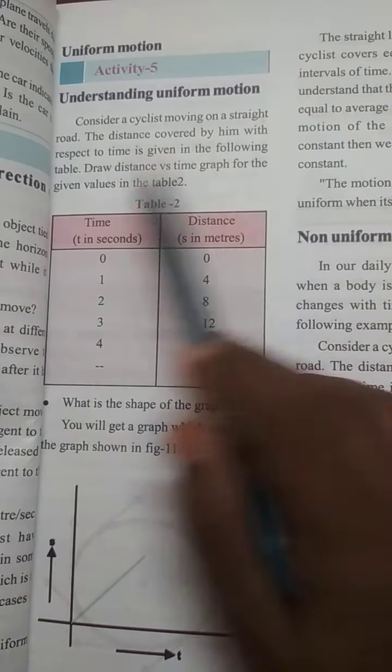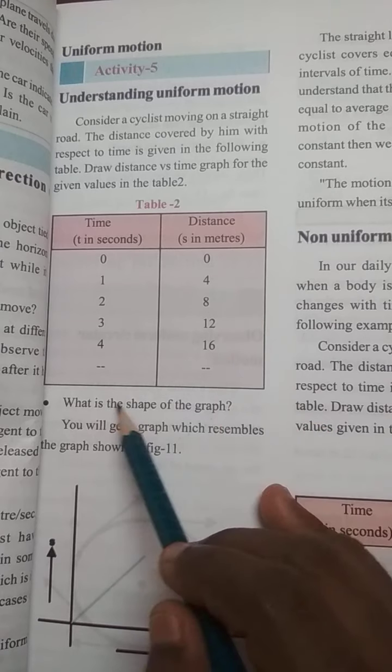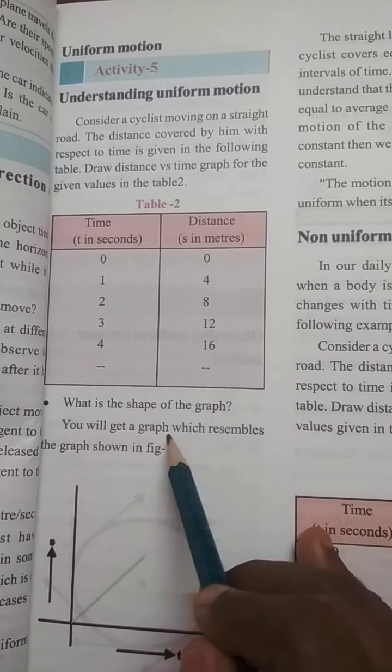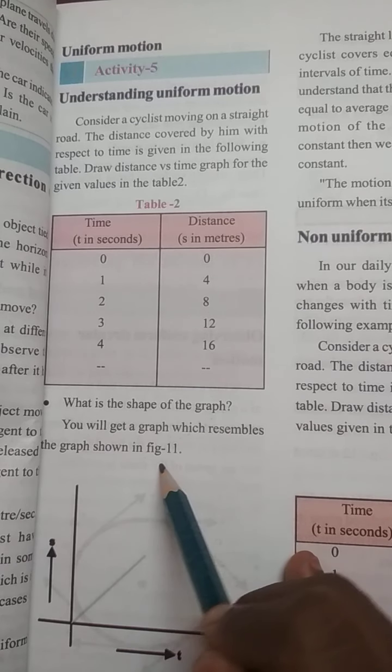Zero seconds, zero distance. One second, four meters. Two seconds, eight meters. Three seconds, 12 meters. Four seconds, 16 meters. What is the shape of the graph? You will get a graph which resembles the graph shown.